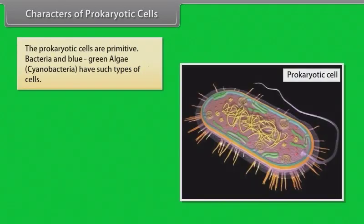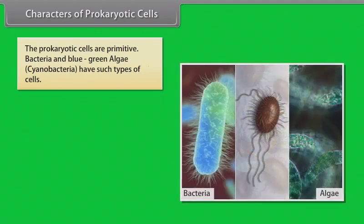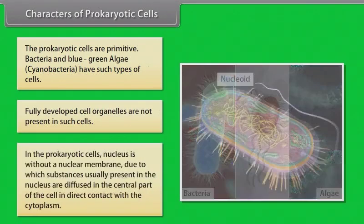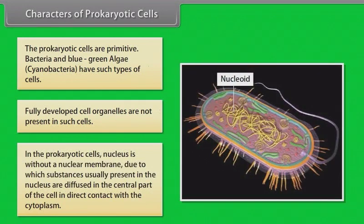The prokaryotic cells are primitive. Bacteria and blue-green algae, that is cyanobacteria, have such types of cells. Fully developed cell organelles are not present in such cells. In prokaryotic cells, the nucleus is without a nuclear membrane, due to which substances usually present in the nucleus are diffused in the central part of the cell, in direct contact with the cytoplasm.